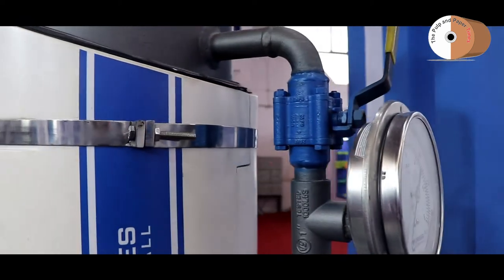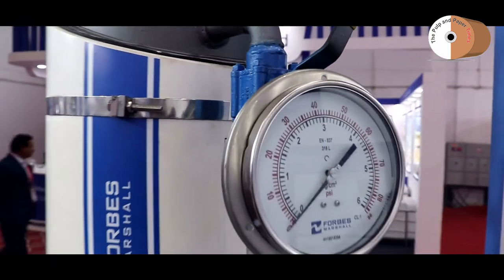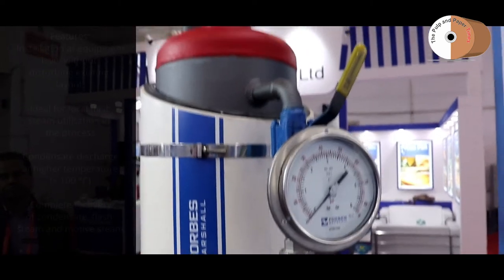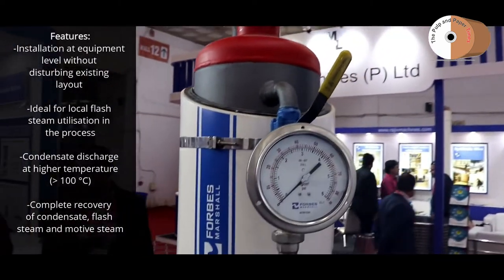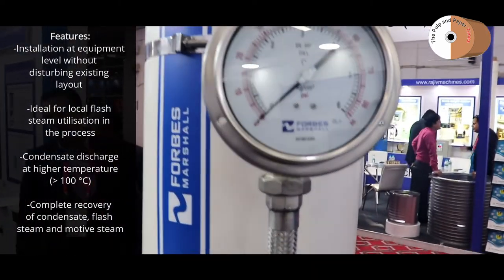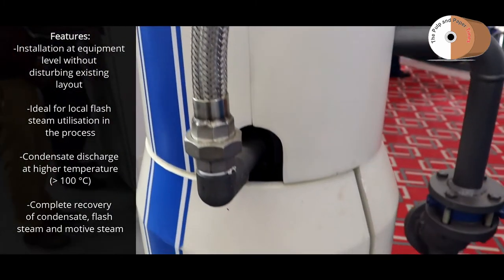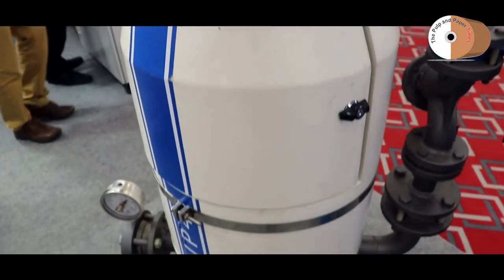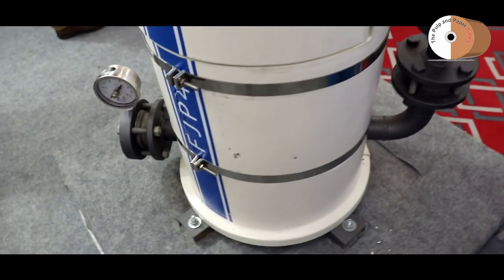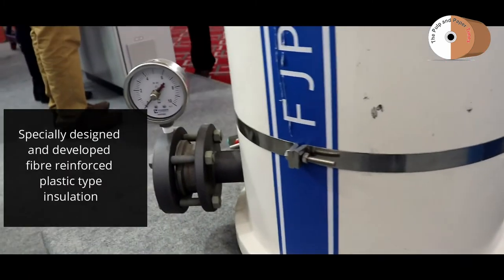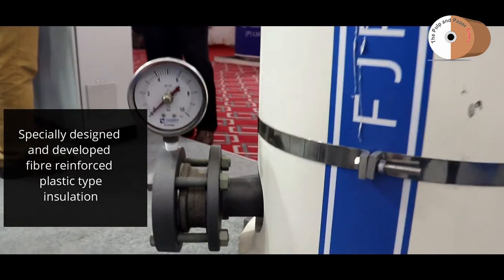For that particular purpose, we have designed the flash jet pump, which is a mechanical equipment that uses steam as energy to pump condensate to the boiler house with higher energy content. More than 90 degree temperature can be achieved in the feed water tank. There is no electricity required, it's maintenance free, and all steam and condensate is recovered.